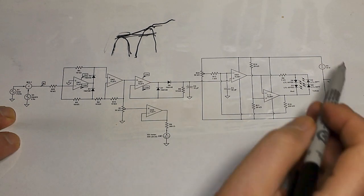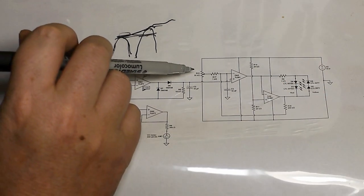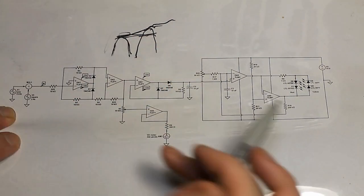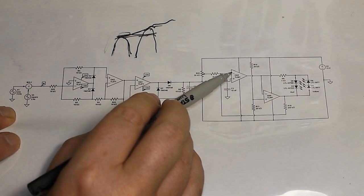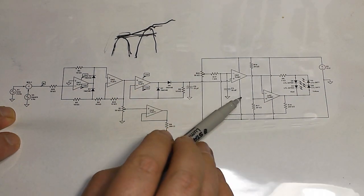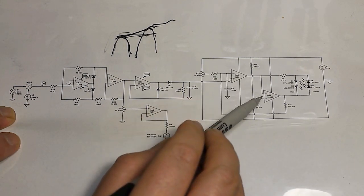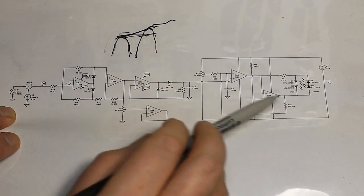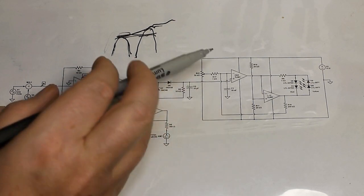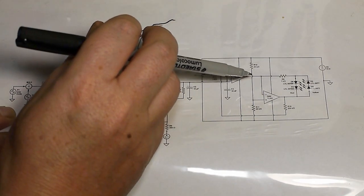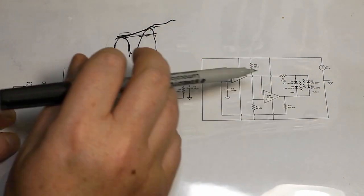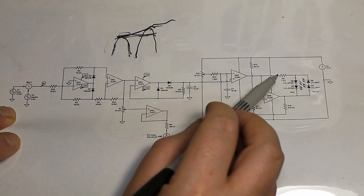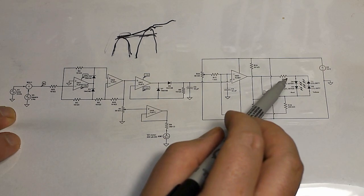Basically what we're doing is we then set up another comparator here which is looking at the output of that one, and it uses a voltage divider which just divides the supply voltage in half. So this is basically just being used to invert the output of this one. So if it's going above the halfway mark, then the other one goes the opposite way and vice versa. That's basically what we're doing there.